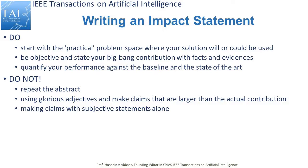Do not use glorious adjectives and make claims that are larger than the actual contribution. For example, saying 'our system is the best unbiased system with fantastic abilities to do lots of good things' — what does this actually mean? These are glorious adjectives, but the information content of this statement is extremely low, if it exists at all. Do not make claims with subjective statements alone. Do not just conclude by saying your system is better than the state of the art without quantifying how much better, under what conditions, and when it will or will not work.